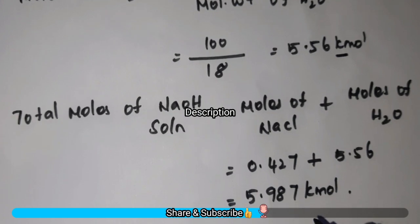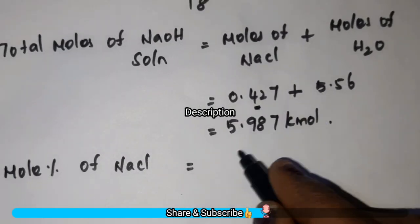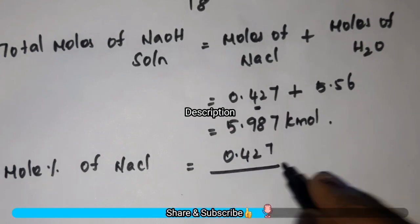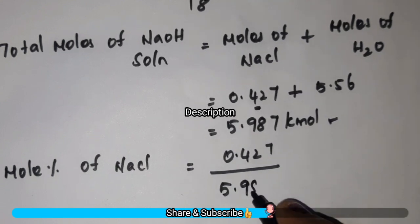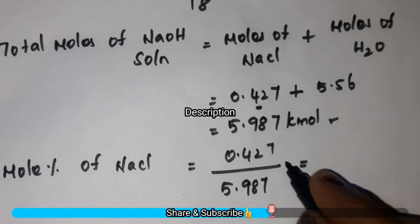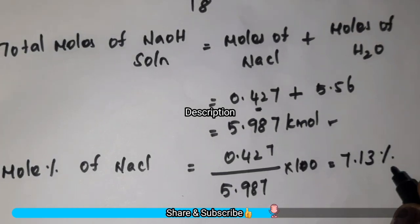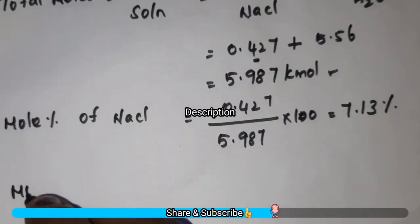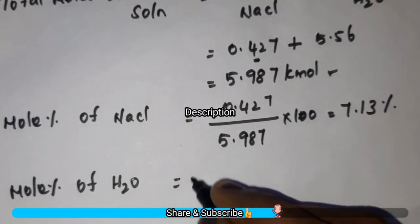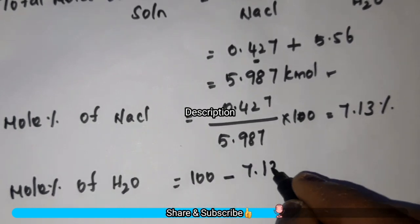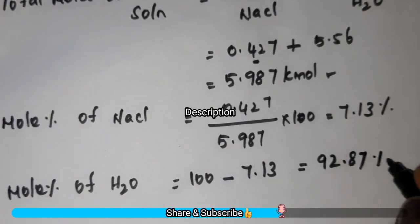Mole percentage of NaCl is equal to moles of NaCl (0.427) divided by total moles of NaCl solution (5.987), into 100, which is equal to 7.13%. You can directly calculate mole percentage of H₂O as 100 minus 7.13, equal to 92.87%.